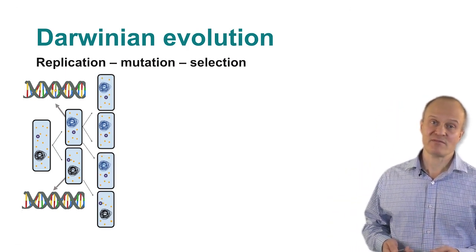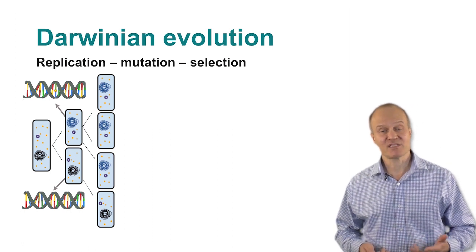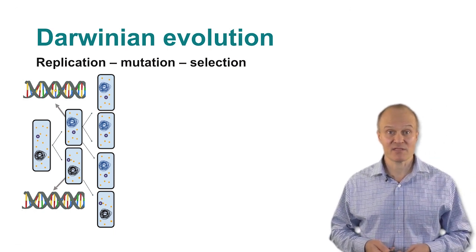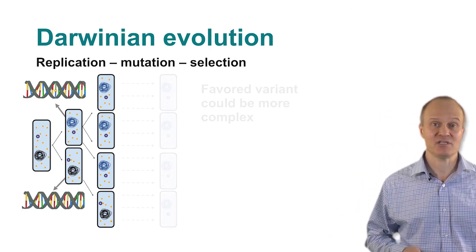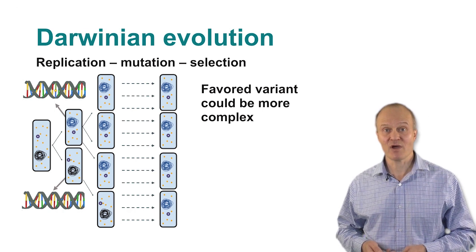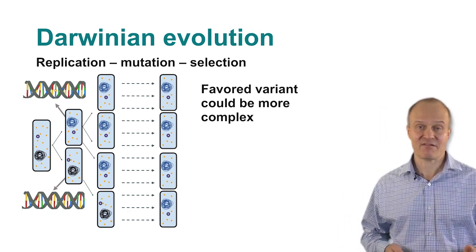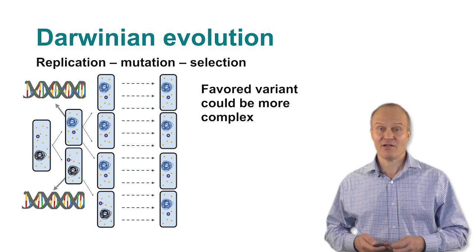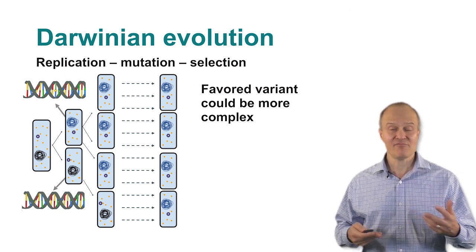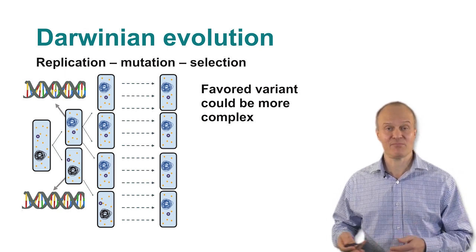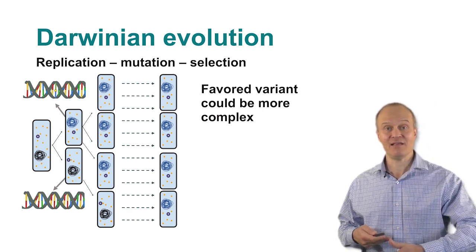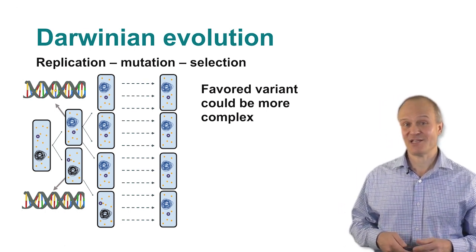That mutation could give that organism's descendants an advantage, such that over time they come to out-compete and predominate relative to organisms in the population that don't have that mutation, and finally take over the whole population. Whether the blue or black variant wins is entirely driven by the effect of the mutation on the fitness of the organisms. It's irrelevant whether it makes the organism more or less complicated. As a result, adaptive evolution is a process that can yield, over many rounds, dramatic increases in complexity over time.